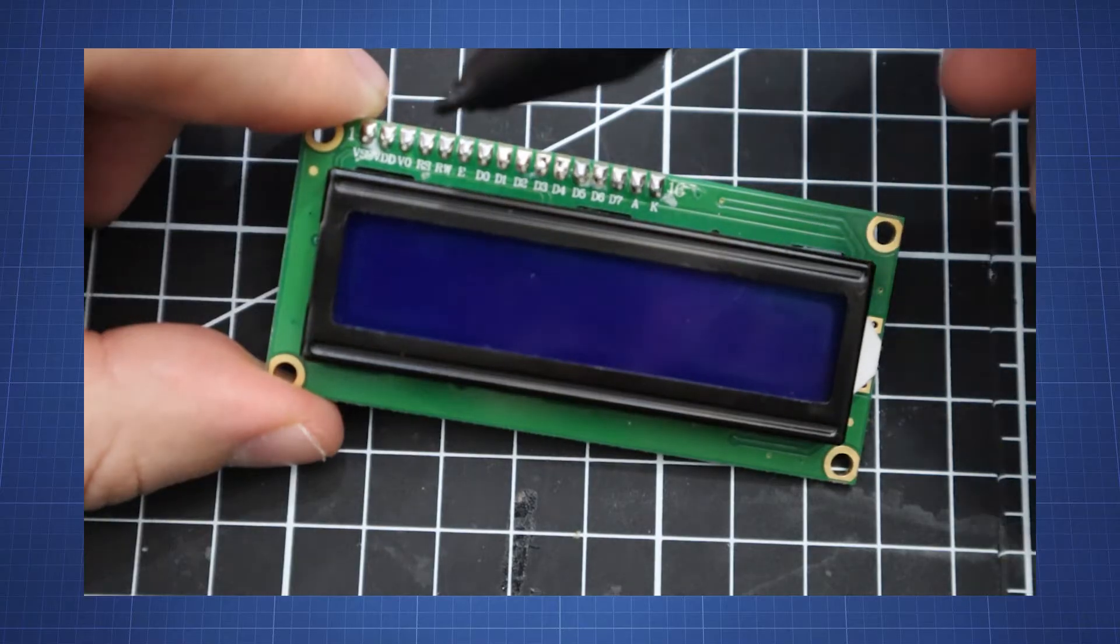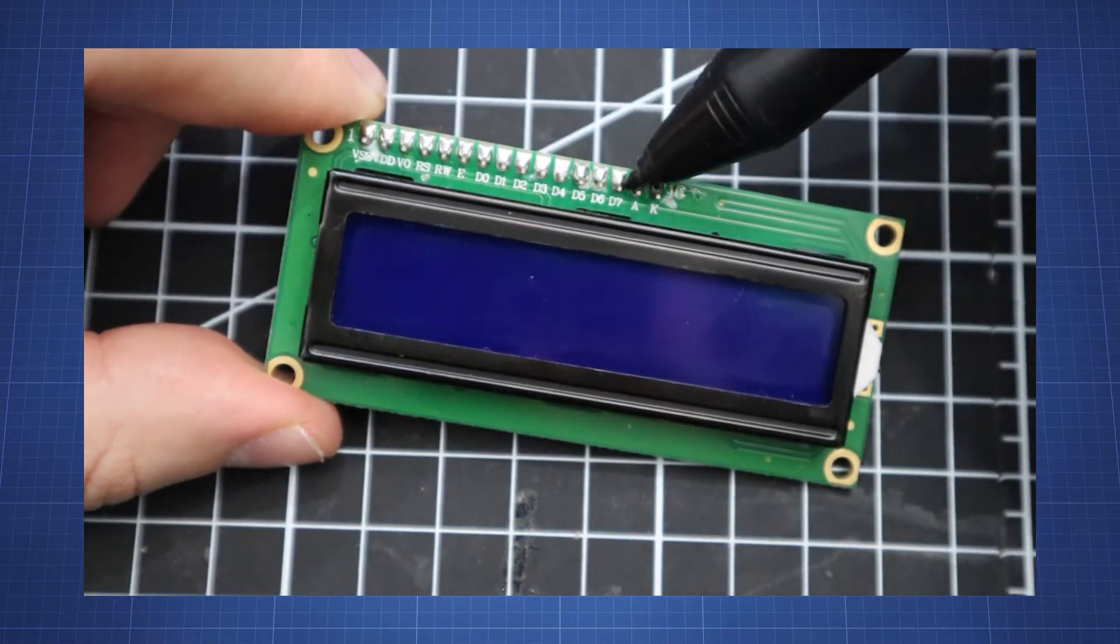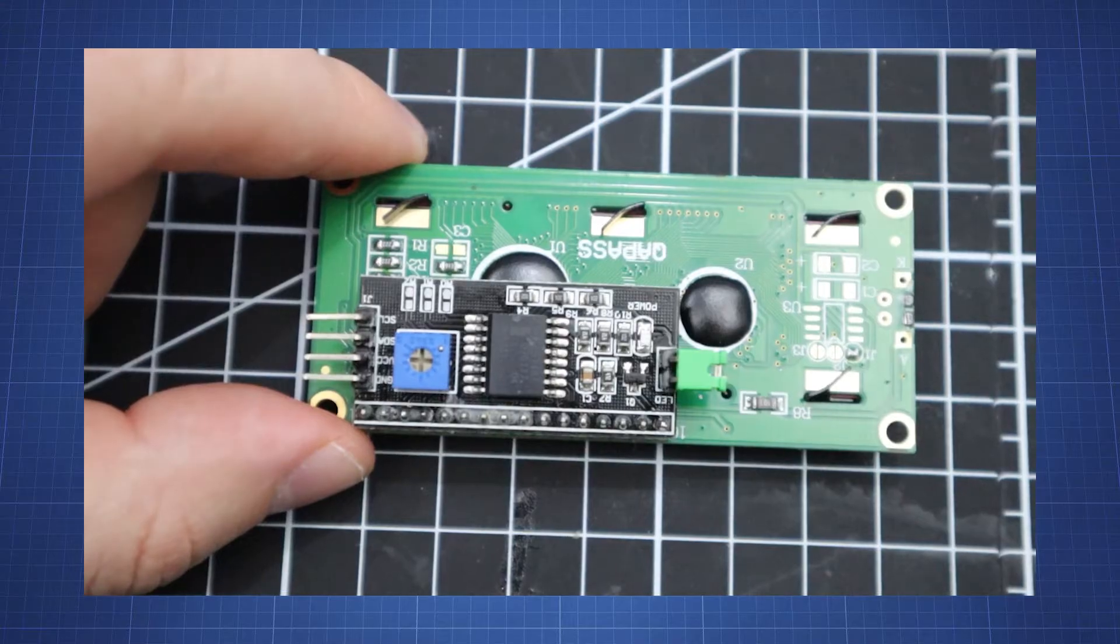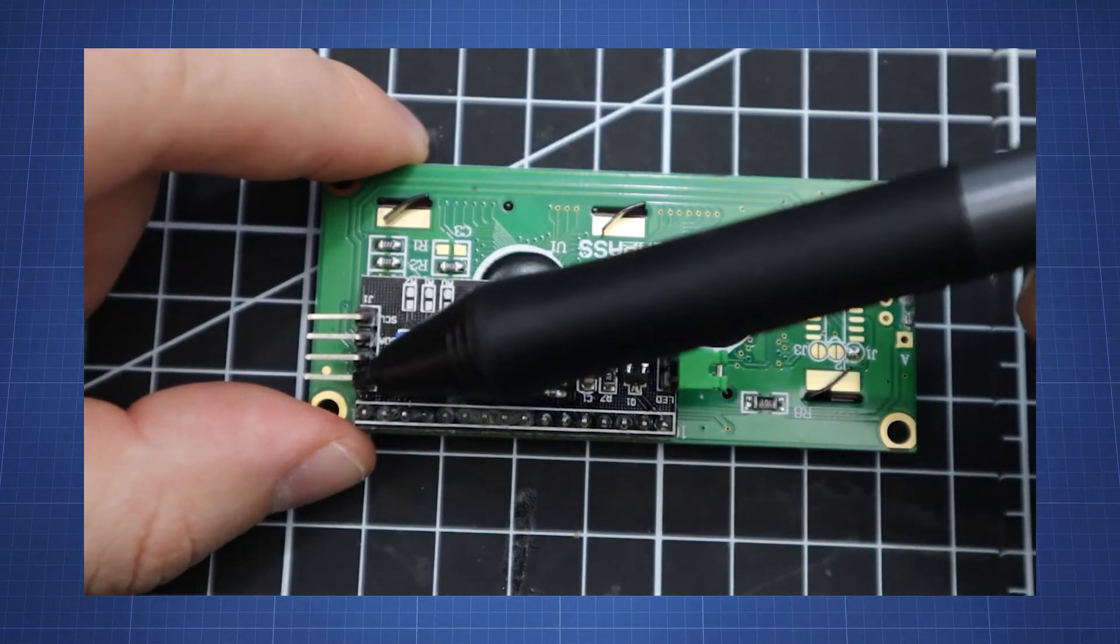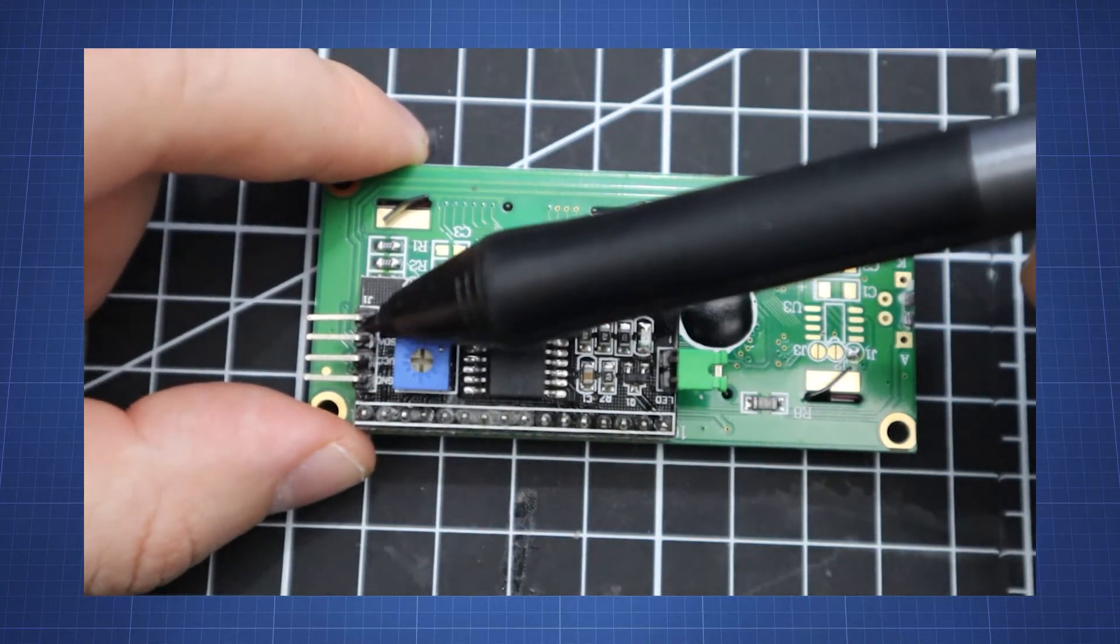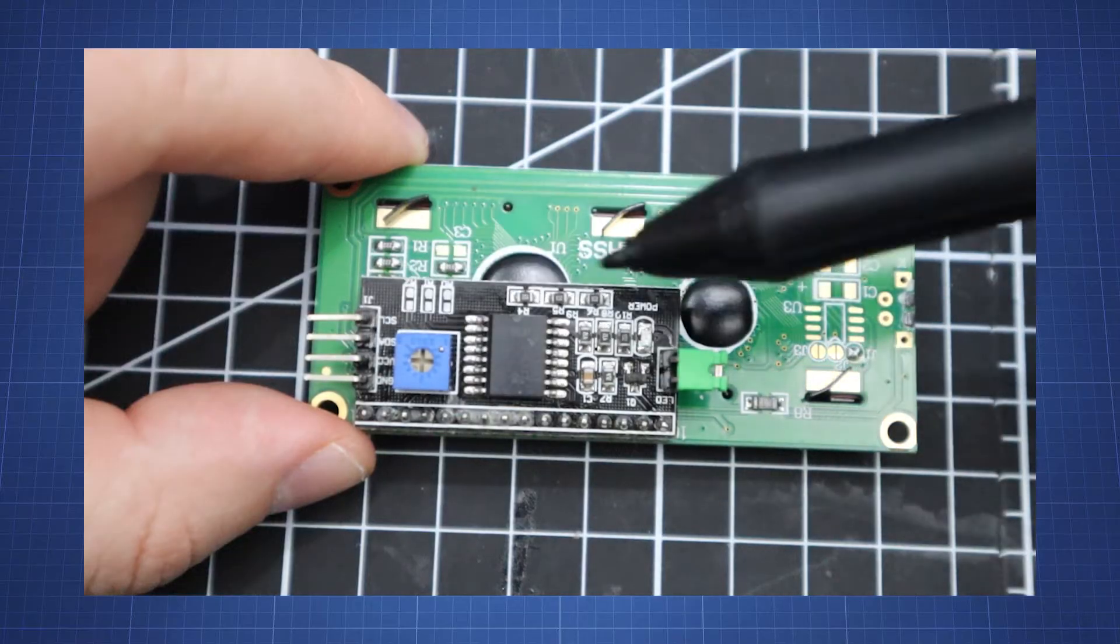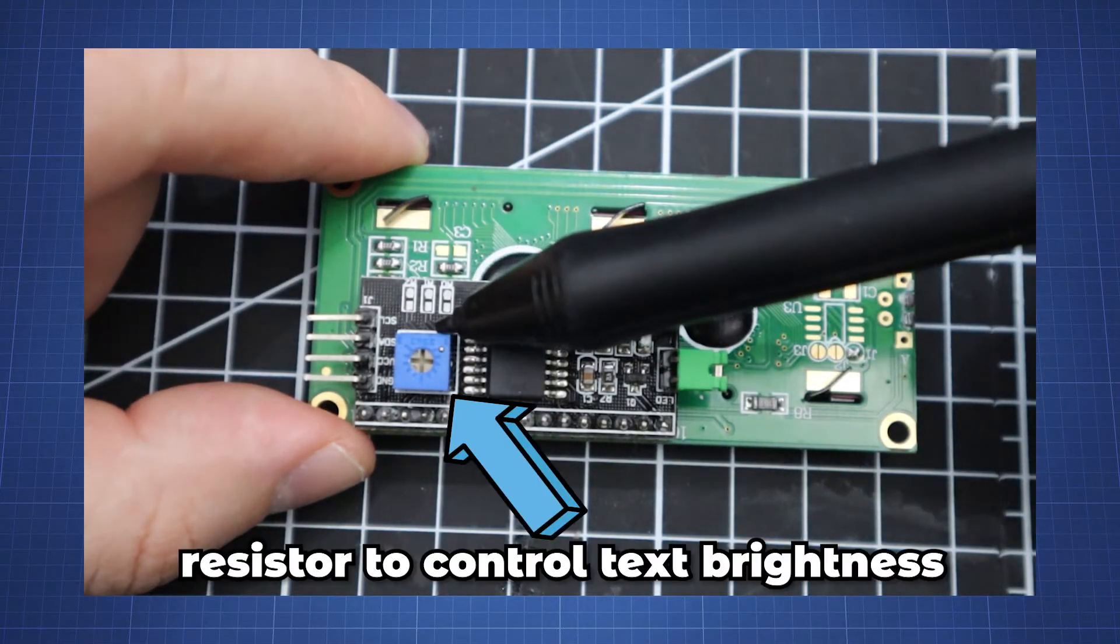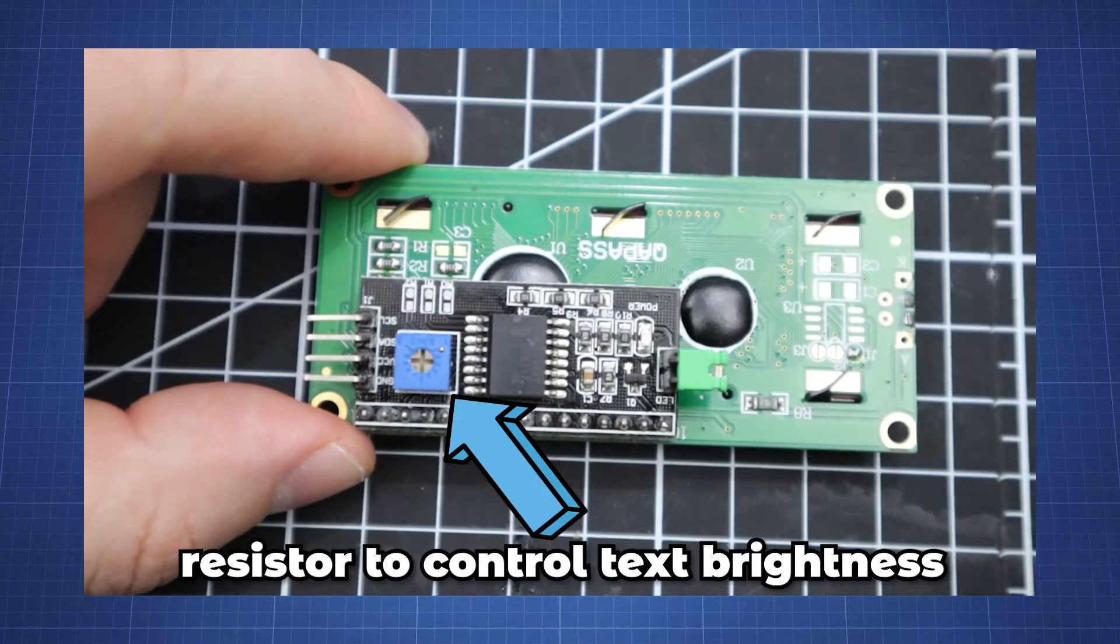This LCD has many different pins that need to be connected to be controlled by the Raspberry Pi Pico, but today to reduce the number of pins and keep the video as basic as possible we will use the I2C adapter. This will reduce the number of pins from 16 to 4 and create a simpler communication method.